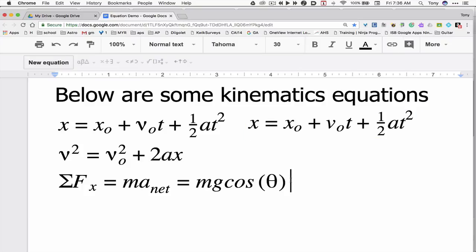Now down here at the bottom I want to show you something. So I did one other equation: the summation of the forces in the X direction is equal to M A subscript net equals M G cosine theta. And for this I used the equation editor. But let me show you something. I'm going to use above the 9, shift 9 and shift 0, and I get that parentheses. Otherwise I get this other parentheses. But these function differently.